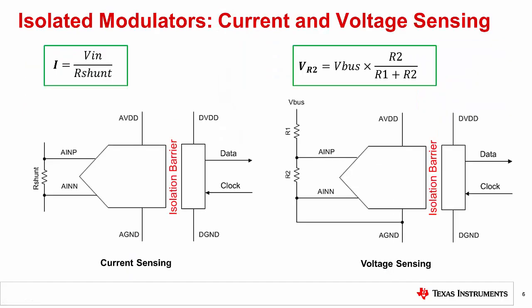Here are two common applications for isolated modulators: current sensing and voltage sensing. For shunt based current sensing, the input voltage range of the isolated modulator determines the value of the shunt resistor based on the current to be measured. Low power or battery operated applications benefit from less power dissipation through the shunt, which can be achieved by reducing the shunt resistance and pairing it with an appropriately sized modulator input range.